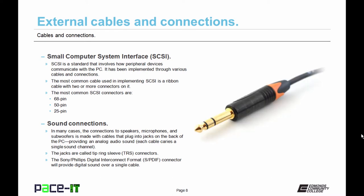Now let's move on to sound connections. In most cases, the connection to speakers, microphones, and subwoofers is made through a cable that plugs into jacks on the back of the PC, providing an analog audio sound. And what that means is that each cable carries a single sound channel. The jacks and the connector are called tip ring sleeve connectors, TRS connectors.